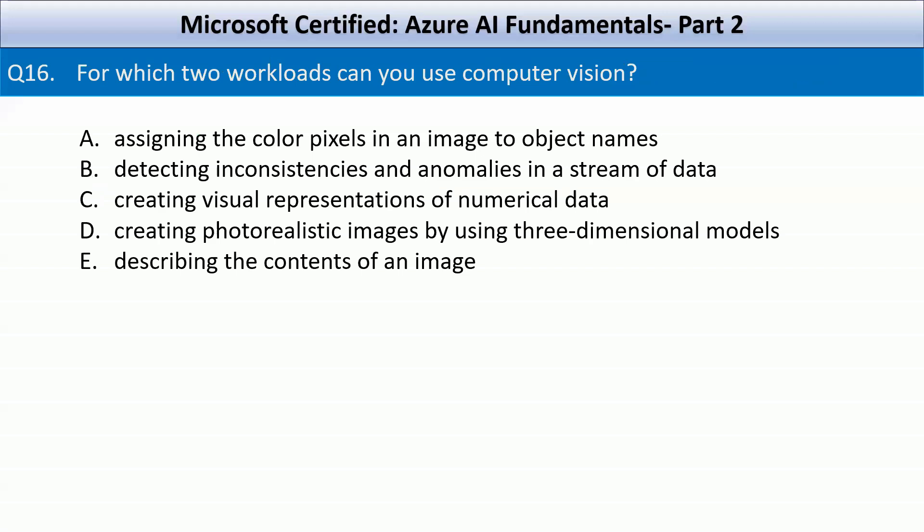For which two workloads can you use computer vision? Your options are: assigning color pixels in an image to object names, detecting inconsistencies and anomalies in a stream of data, creating visual representations of numerical data, creating photorealistic images using three-dimensional models, or describing the contents of an image.